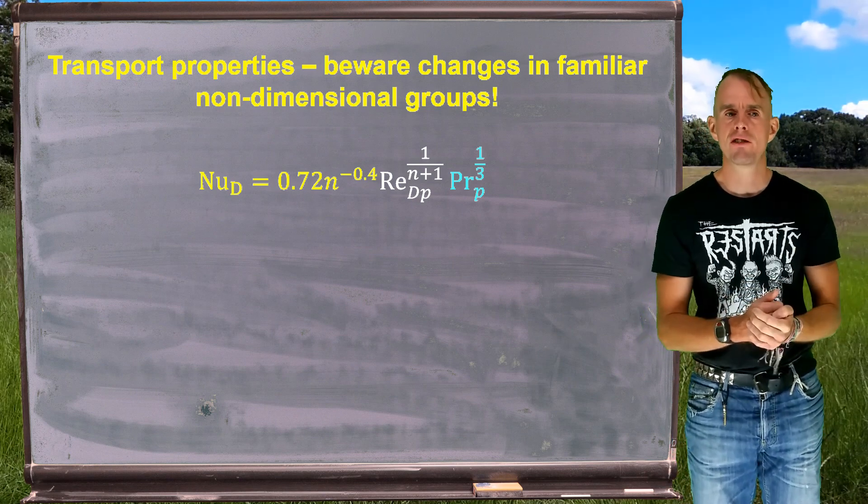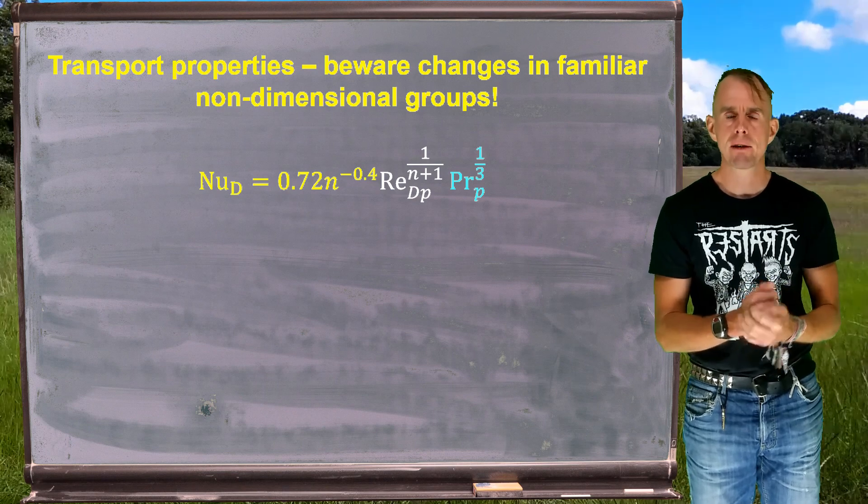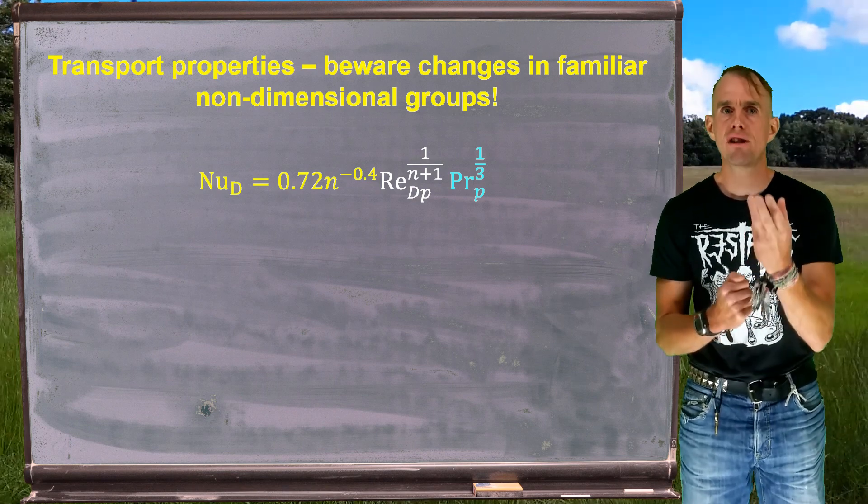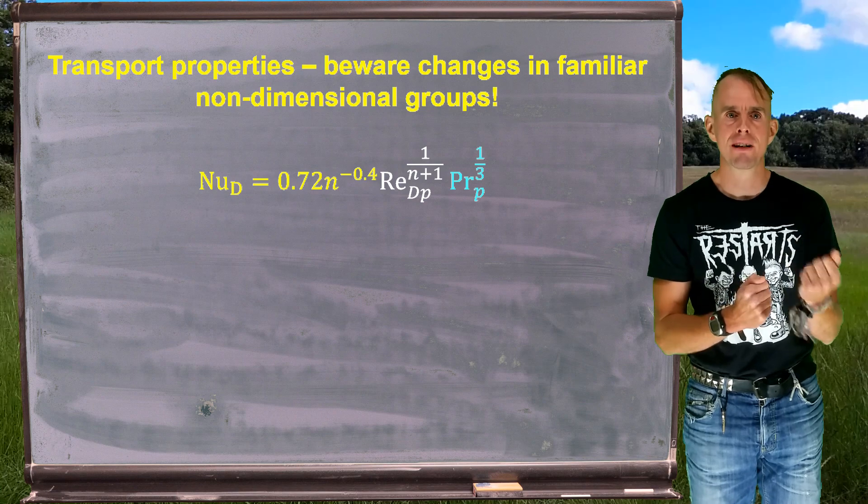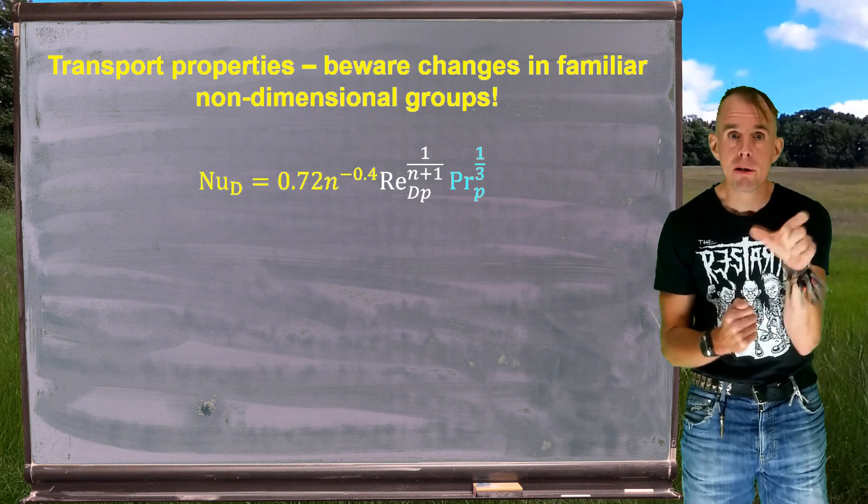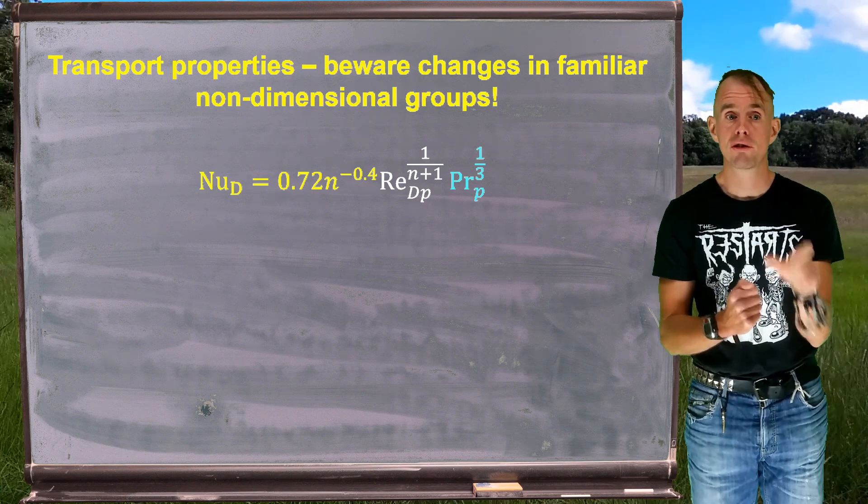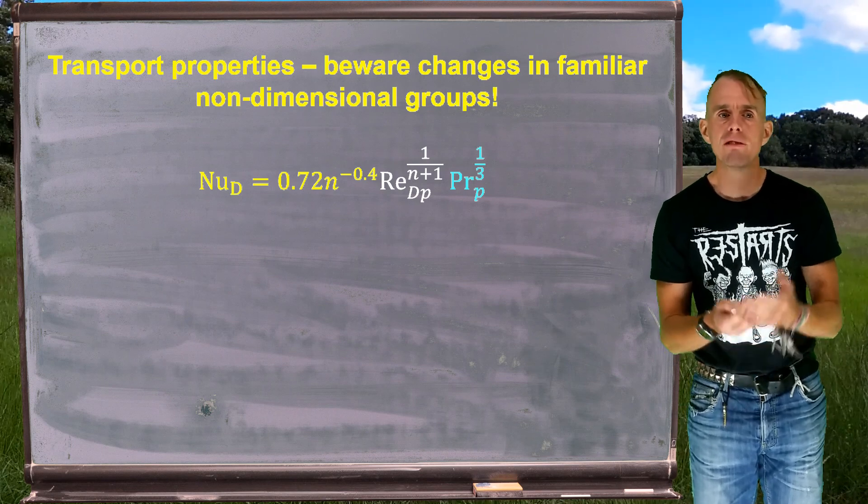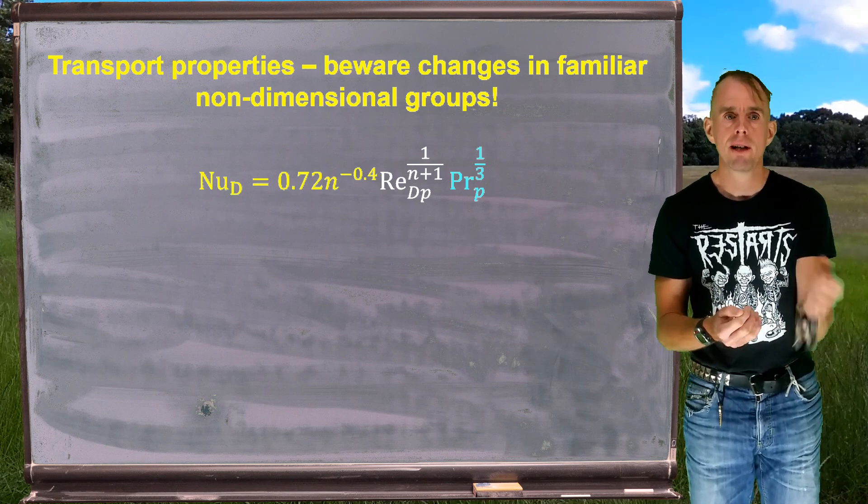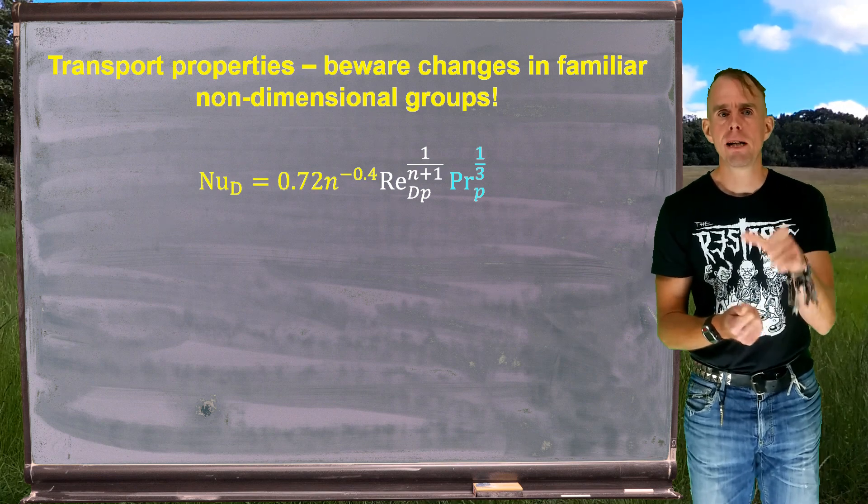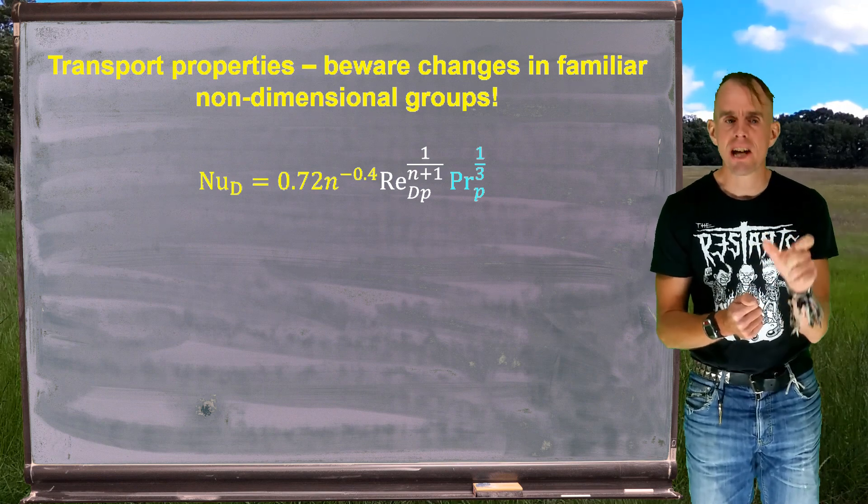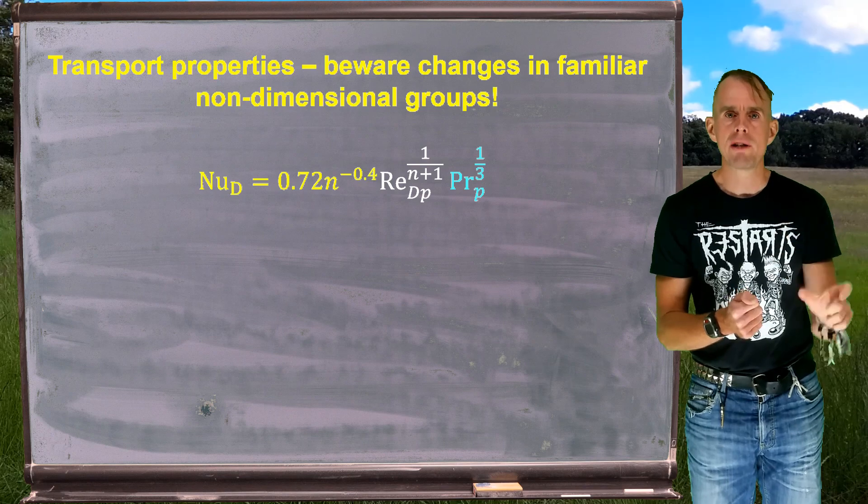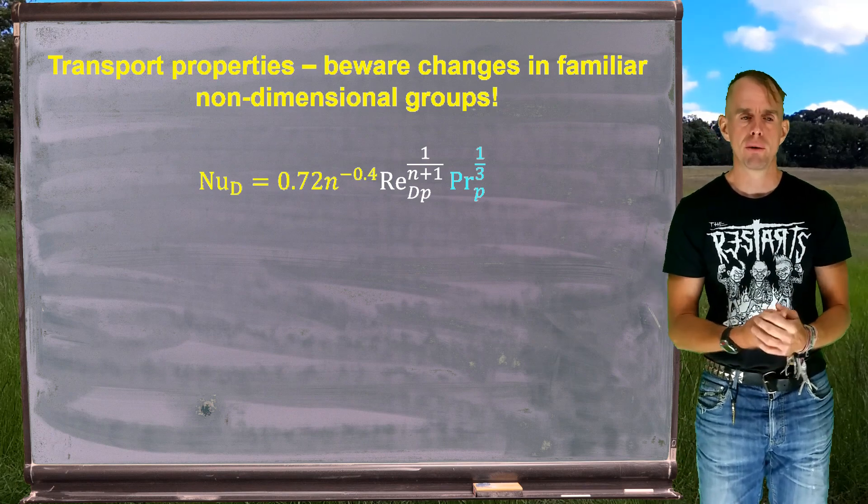Because when chemical engineers see a Reynolds number, they will automatically revert to the Newtonian form of a Reynolds number, rho dv over mu. Mu is the Newtonian viscosity. We're dealing with a power law fluid now. Mu, of course, is not a parameter in a power law fluid. So the key message here is familiar non-dimensional groups change their form when you're dealing with a generalized Newtonian fluid.